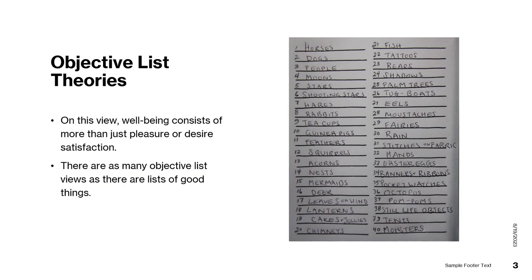This brings us to the basic definition of an objective list theory: it's the view that well-being consists of more than just pleasure or desire satisfaction. There are lots of different kinds of objective list views, depending on how many things are put on the list, how many or how few, and what things they put on there. This is a family of views, not just one singular view.